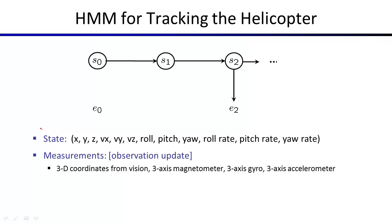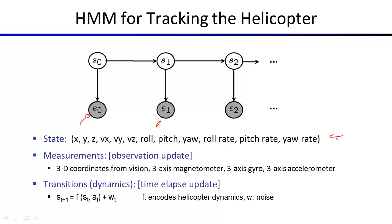For tracking, you use a hidden Markov model. The evidence variables are position estimated by cameras, accelerometer readings, gyro readings, and magnetometer readings. The state variables are XYZ coordinates, XYZ velocities, roll, pitch, yaw, and roll rate, yaw rate, pitch rate. For the dynamics update from time T to T+1, you need a helicopter model: next state is a function of current state and current actions plus noise not captured by the model.